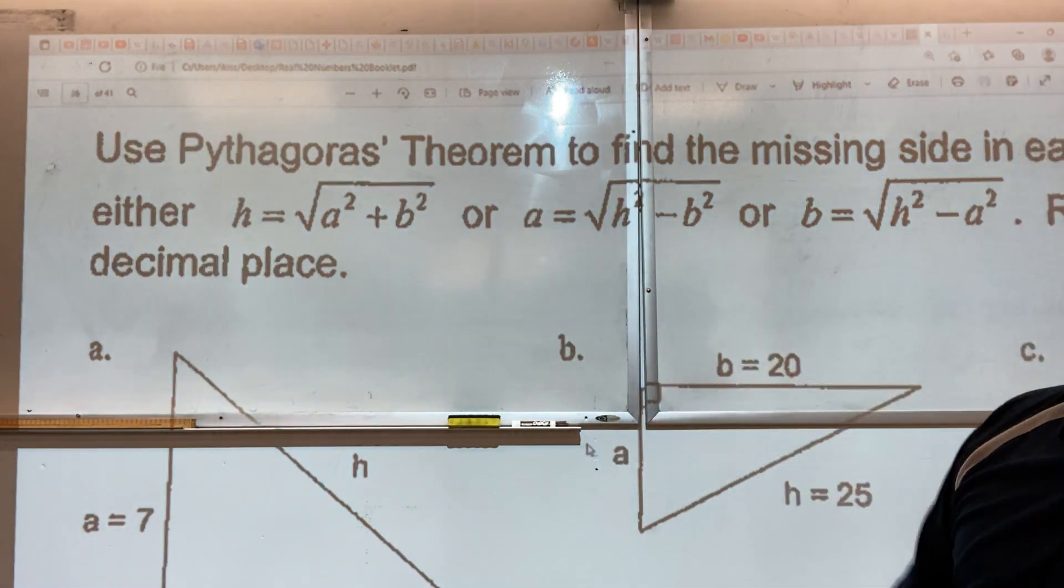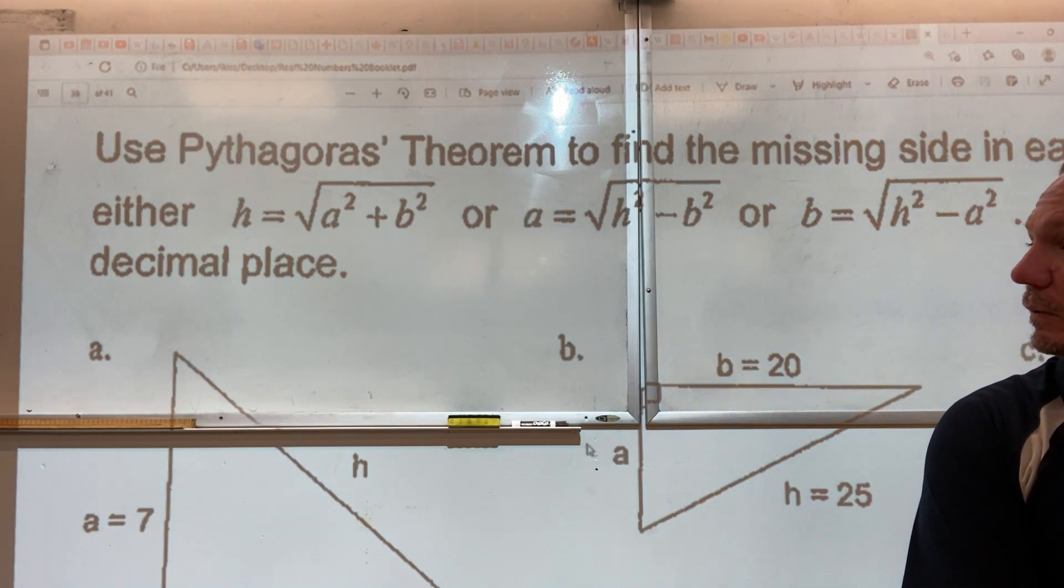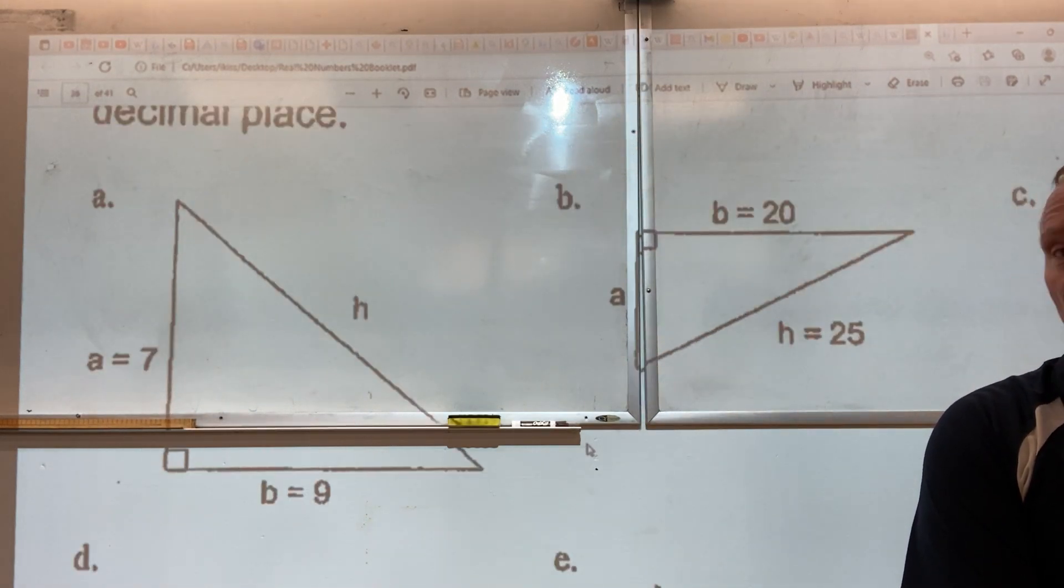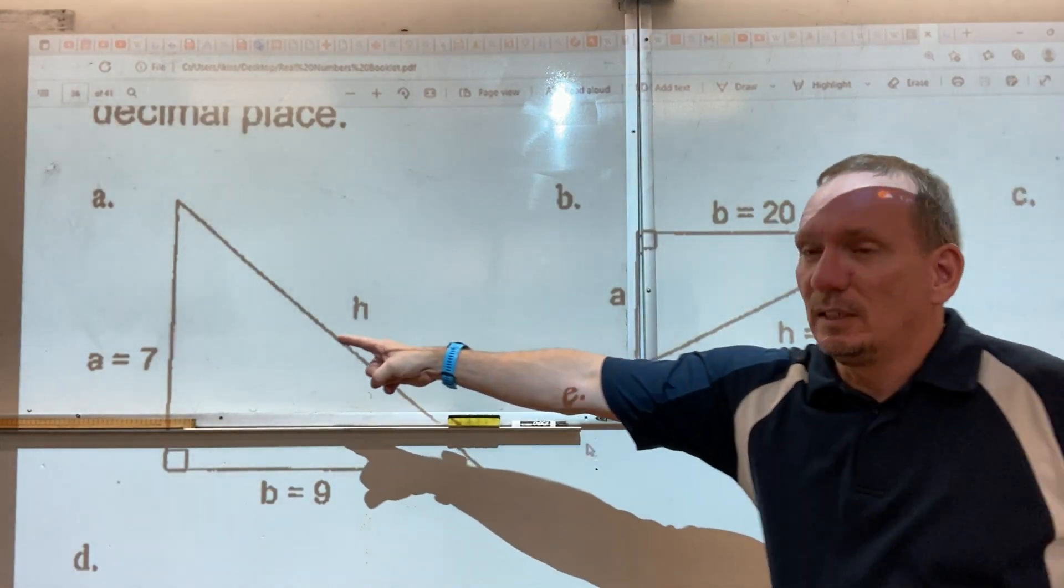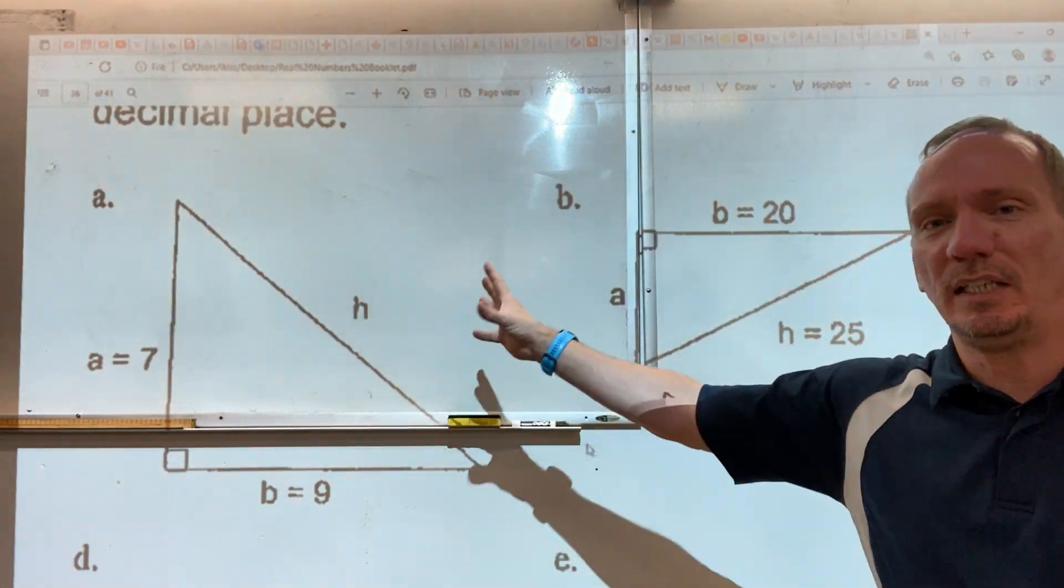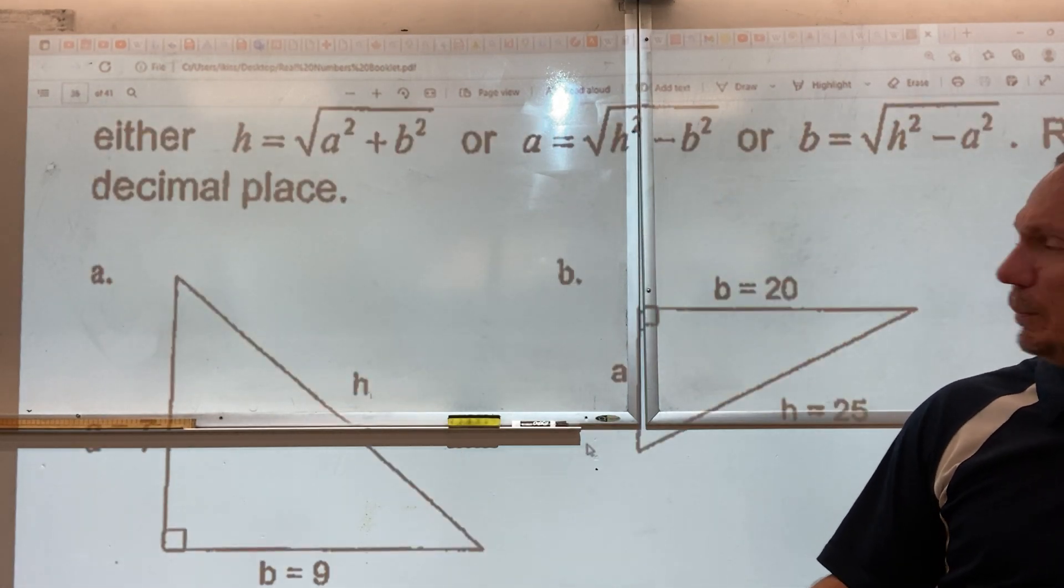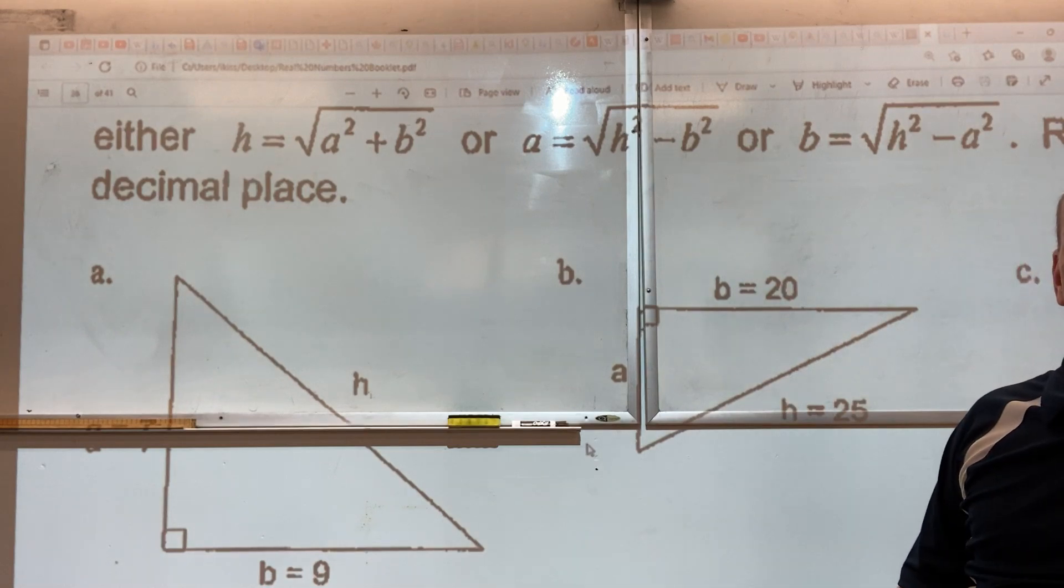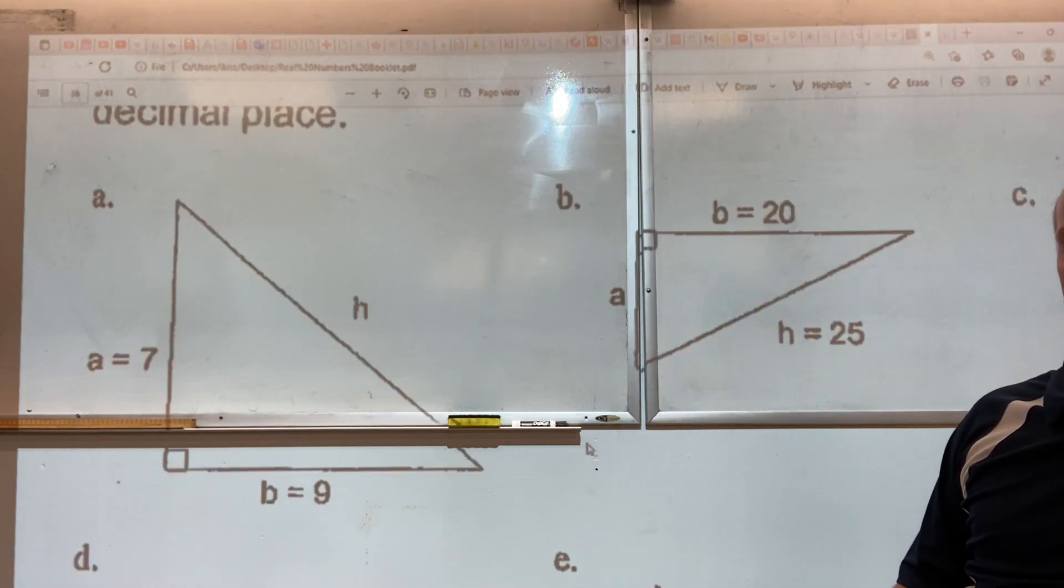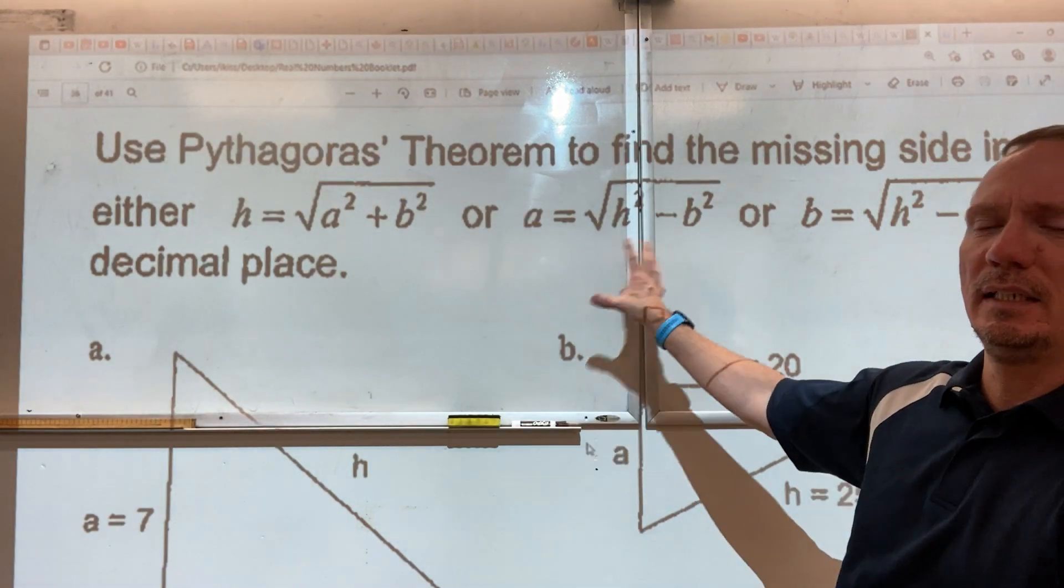I can scroll up a little bit. Some of the numbers disappear, so that triangle is 7 and 9. If I scroll down, that 7 disappears. This one is just size A, and it's 20 and 25. So I'm going to work with these two triangles and give you an example of how the calculation is done.